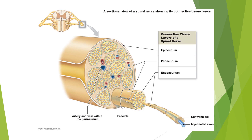Nerves don't exist as discrete wires as such; they actually exist as fascicles — groups of axons coming together — and these are surrounded and embedded by the perineurium, which supports them and includes the vasculature as well. Around all of that is the epineurium, holding all these different fascicles together.